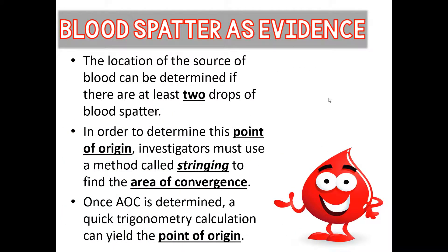When investigators are working a crime scene with blood spatter, all they need is two drops. They can use something called stringing to help paint a picture of what took place. In order to determine point of origin — the ultimate goal — they want to know where a person was standing when they lost blood, or where an object was when it slung blood. Investigators use stringing, and they first need to find the area of convergence, then use that to calculate the point of origin.